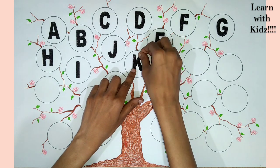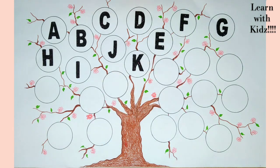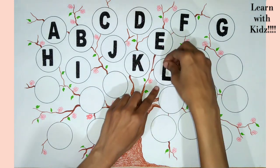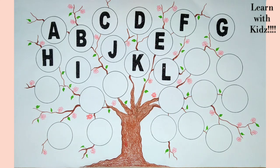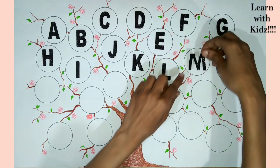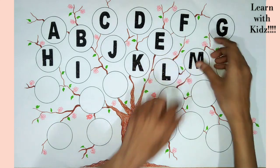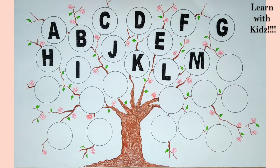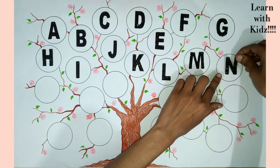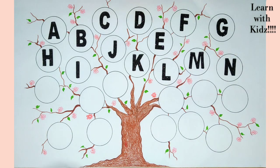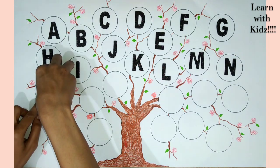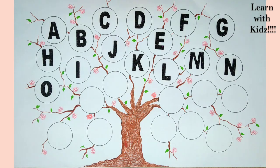K for kite. L for lamp. M for monkey. N for nest. O for owl.